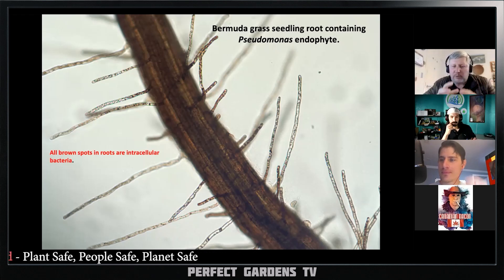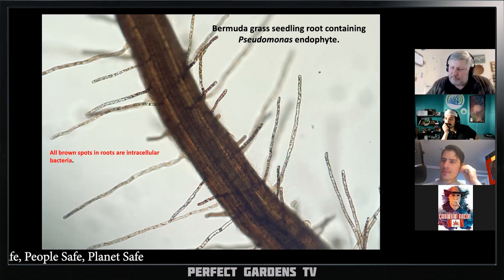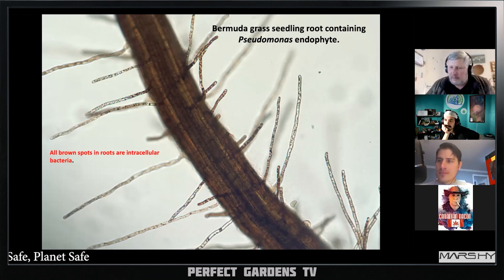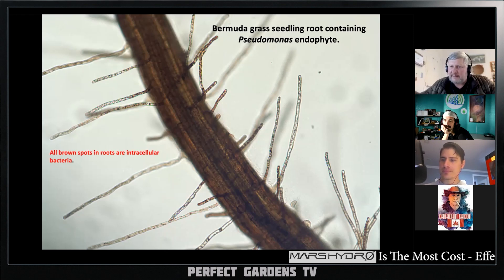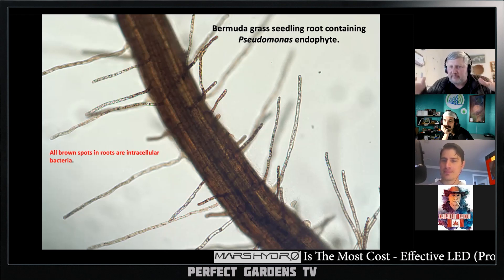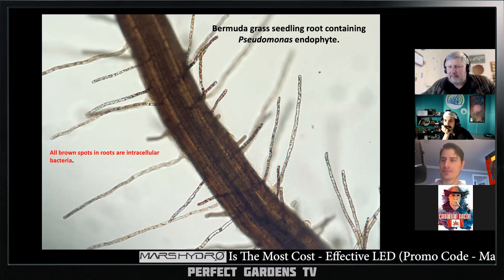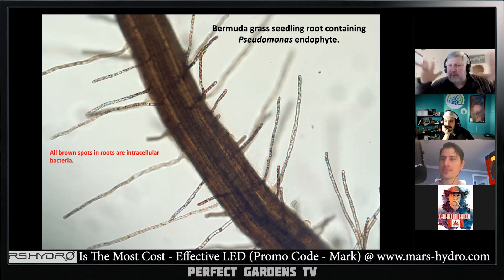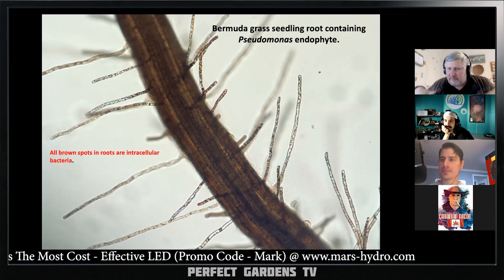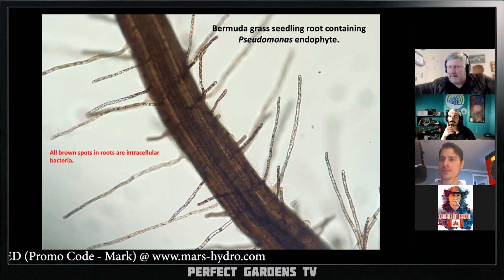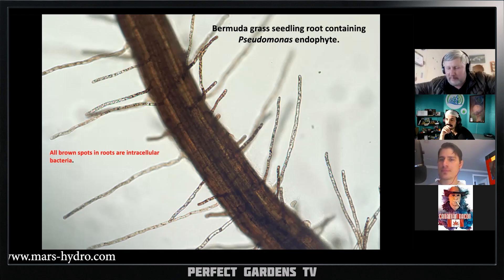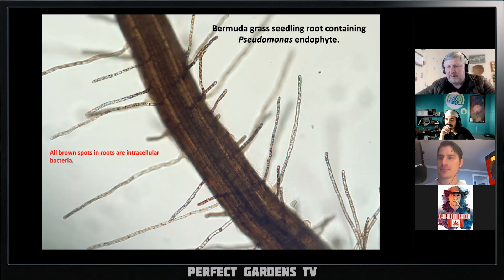Ectomycorrhizal fungi will coat these roots in all parts of the root. And then instead of having root hairs go out there and processing those microbes, these fungi will go out there and acquire those nutrients and get those back to the plant.